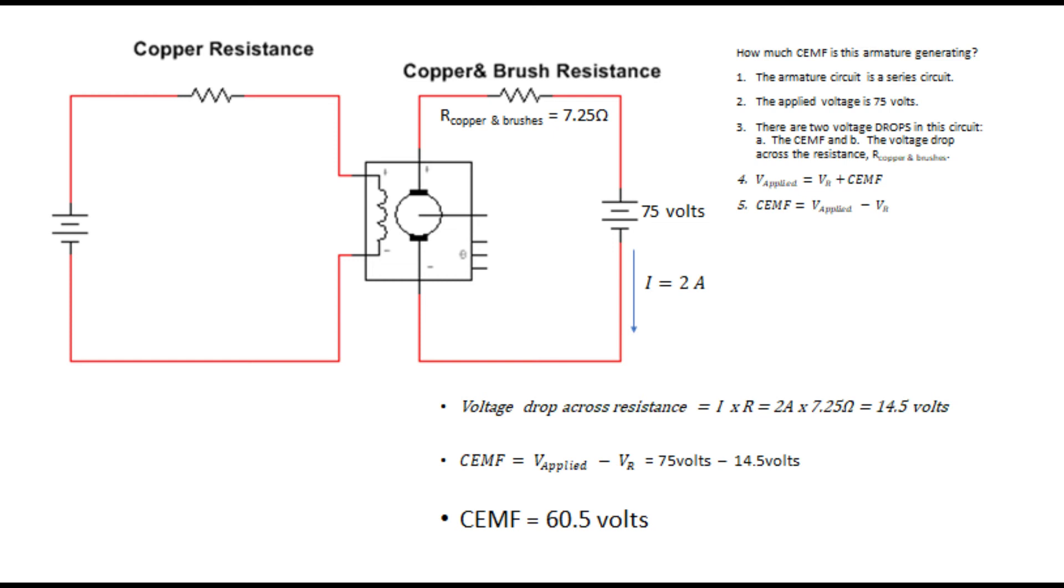Now then, this illustration shows you how to do it. Right side of the picture, upper right-hand group, it says simply that the armature circuit is a series circuit. I know that's simple, but it's important. The applied voltage is 75 volts.